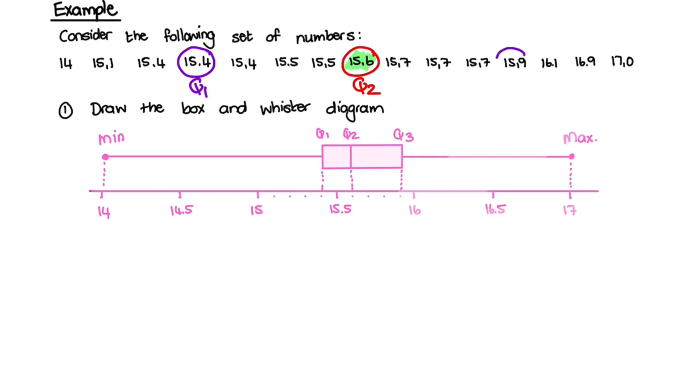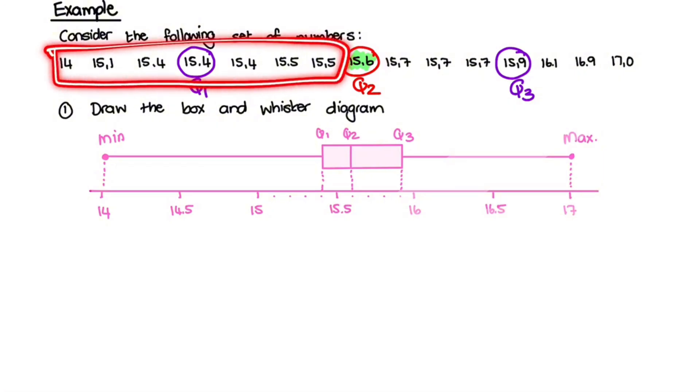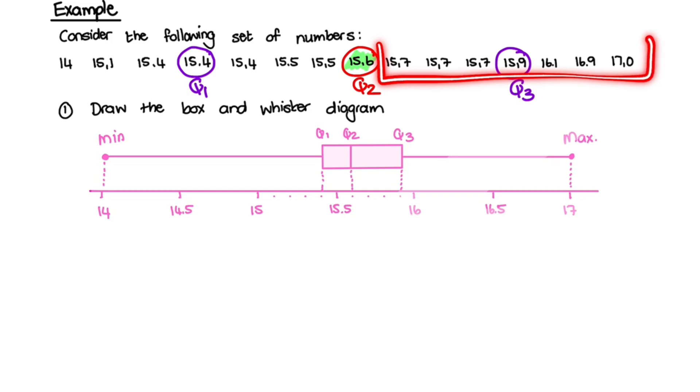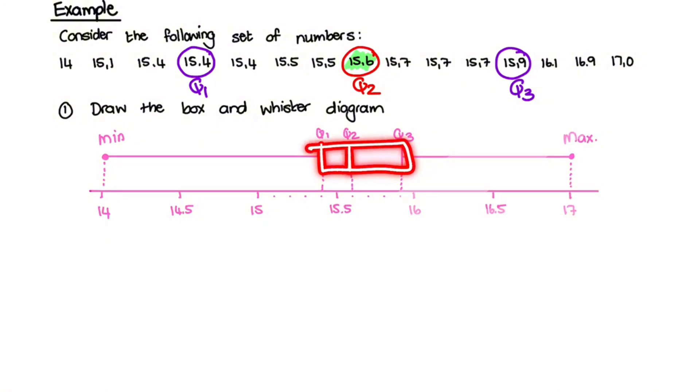The same goes for the upper quartile, or quartile 3. We take the middle value of the upper half of the data points. And notice for quartile 1, and for quartile 3, I ignored the median's value. So I only found the quartile, or the median, of the lower half, and the median of the upper half. And quartile 1, 2, and 3 forms the values that we use within our box, in our box and whisker diagram.